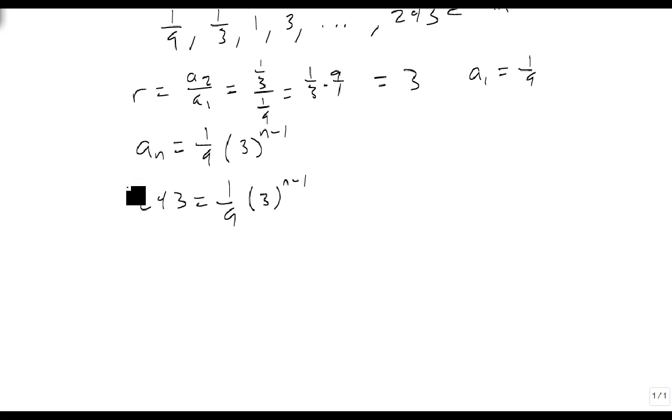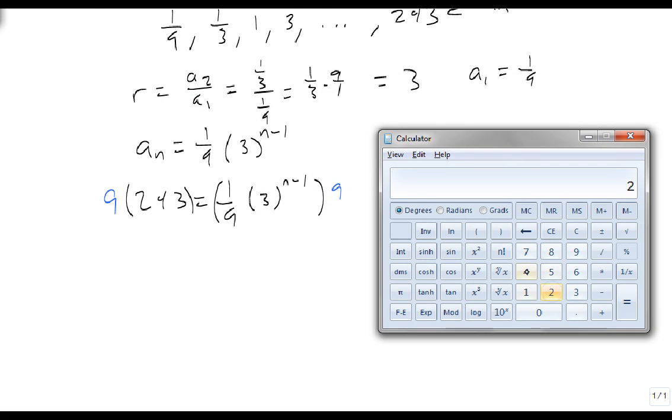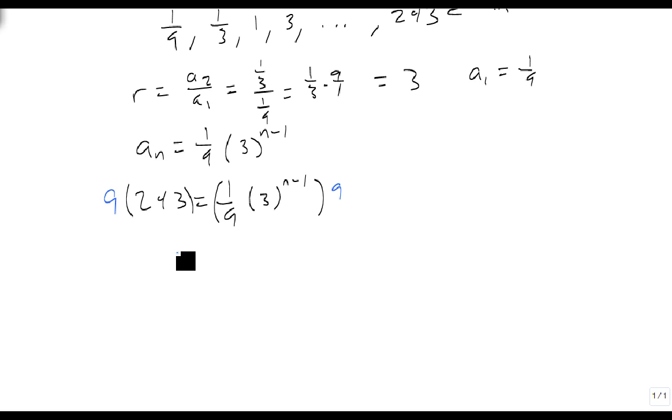Let's multiply both sides by 9. So I get out my calculator, and we do 243 times 9 is 2187. So 2187 equals 3 to the n minus 1.